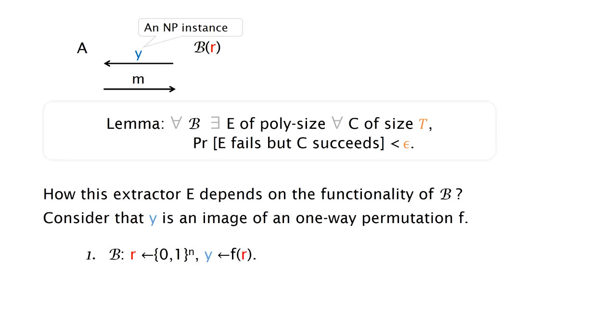And in the first example, the algorithm B chooses an R from the domain of F and then computes F(R). And for this algorithm we have an optimal extractor E that takes R and Y as input and just outputs R.